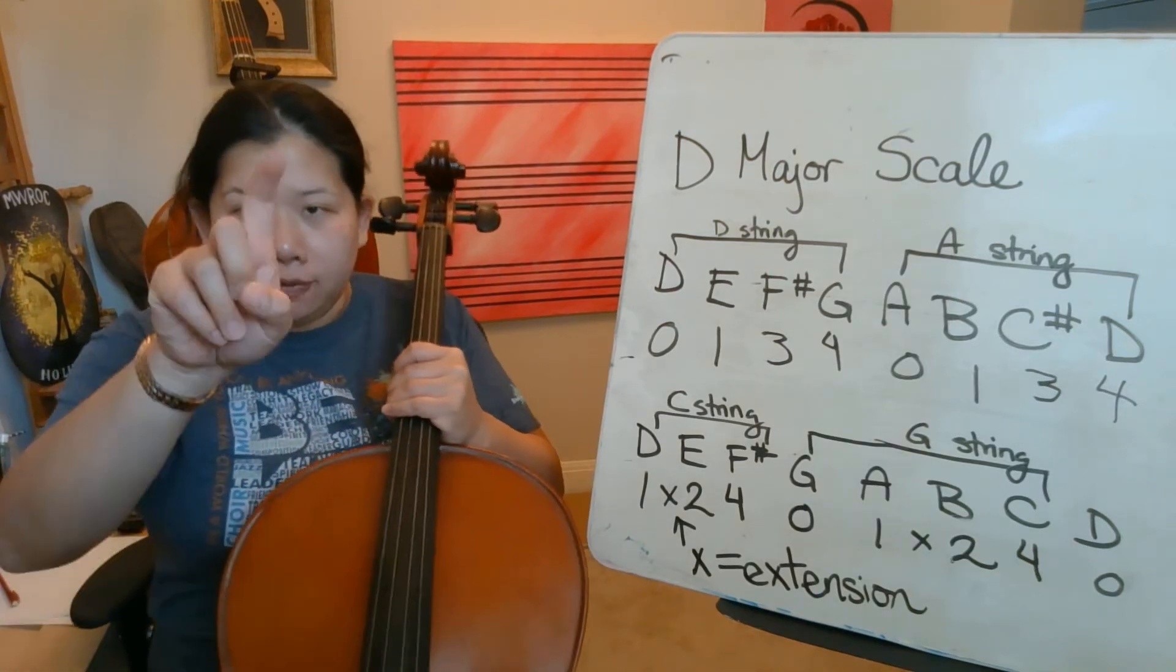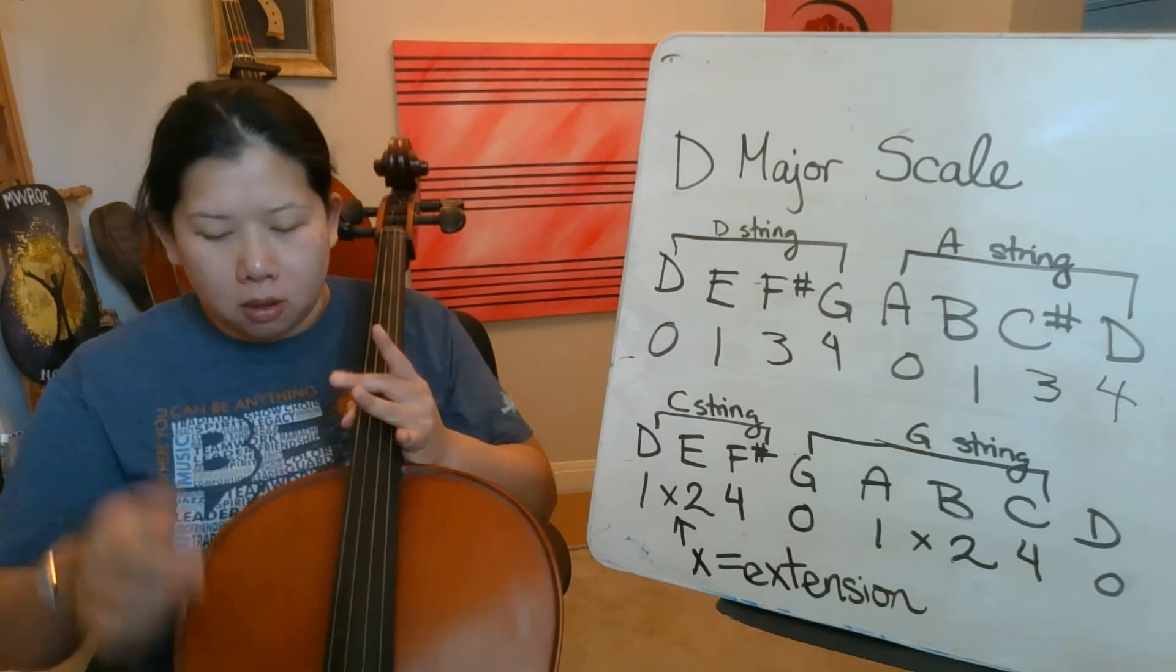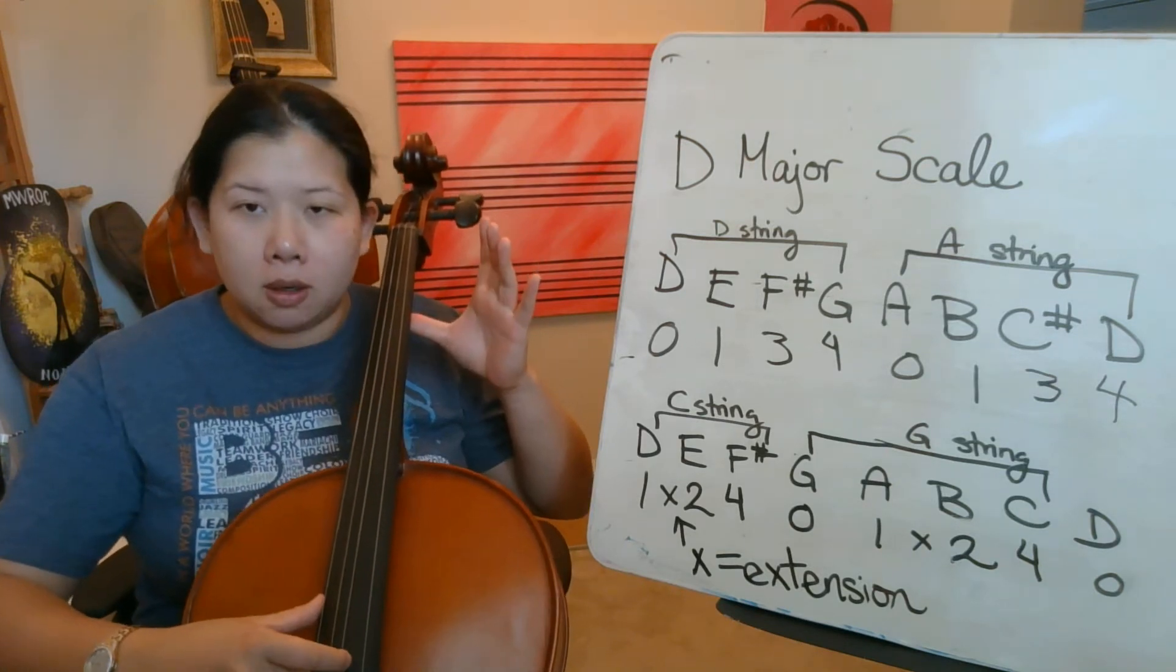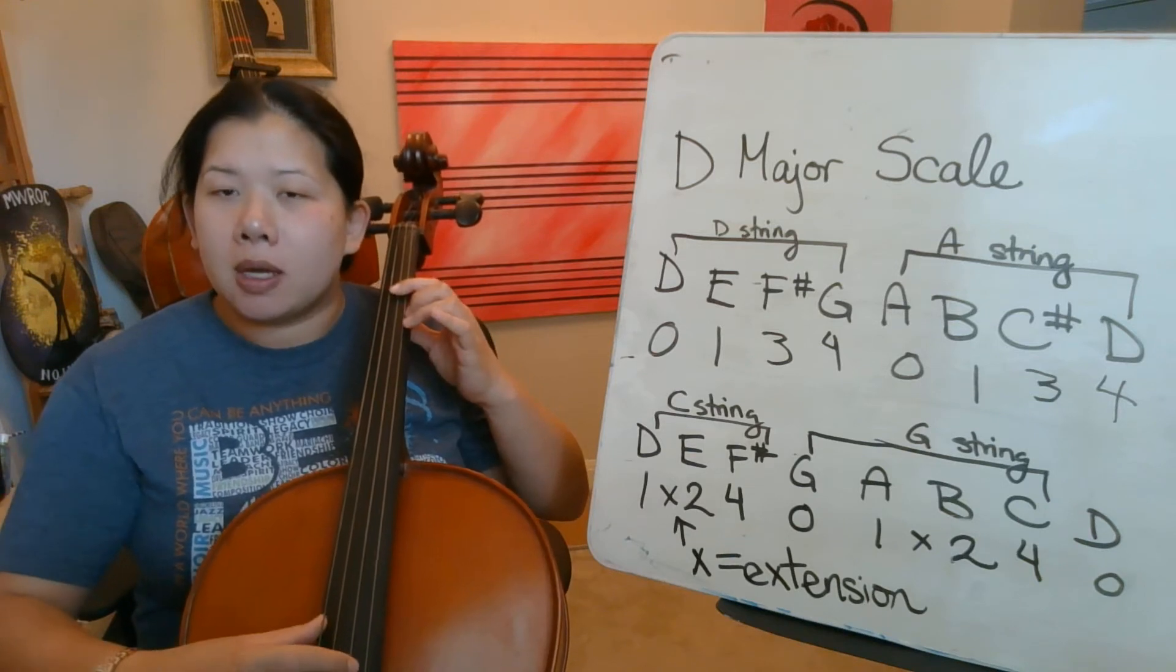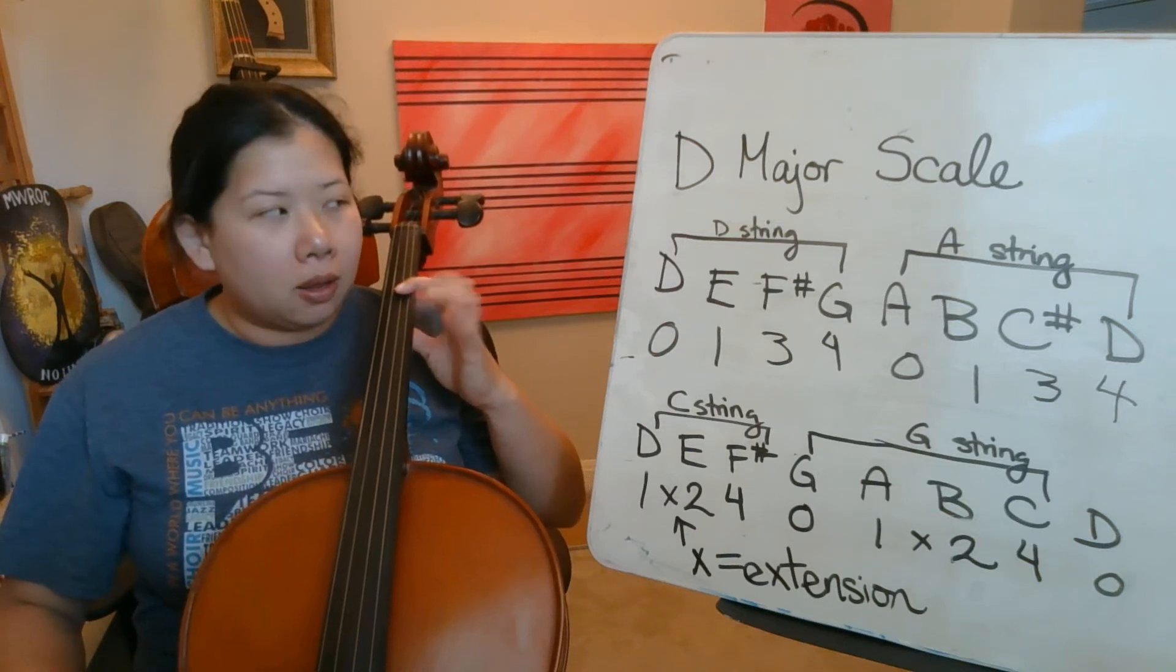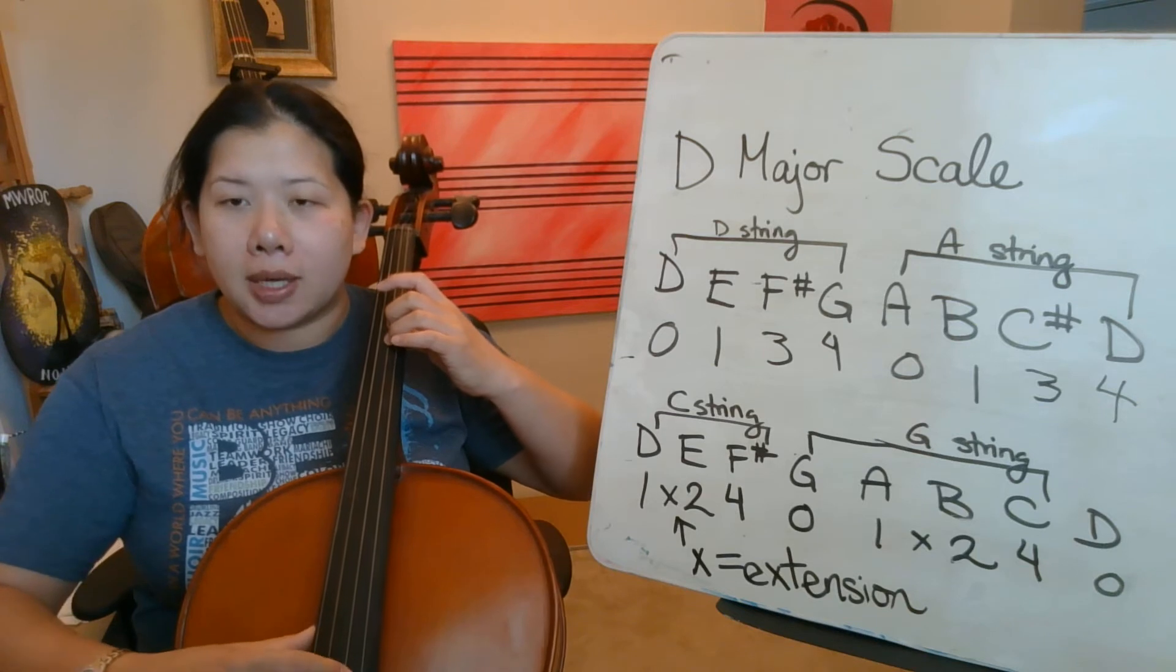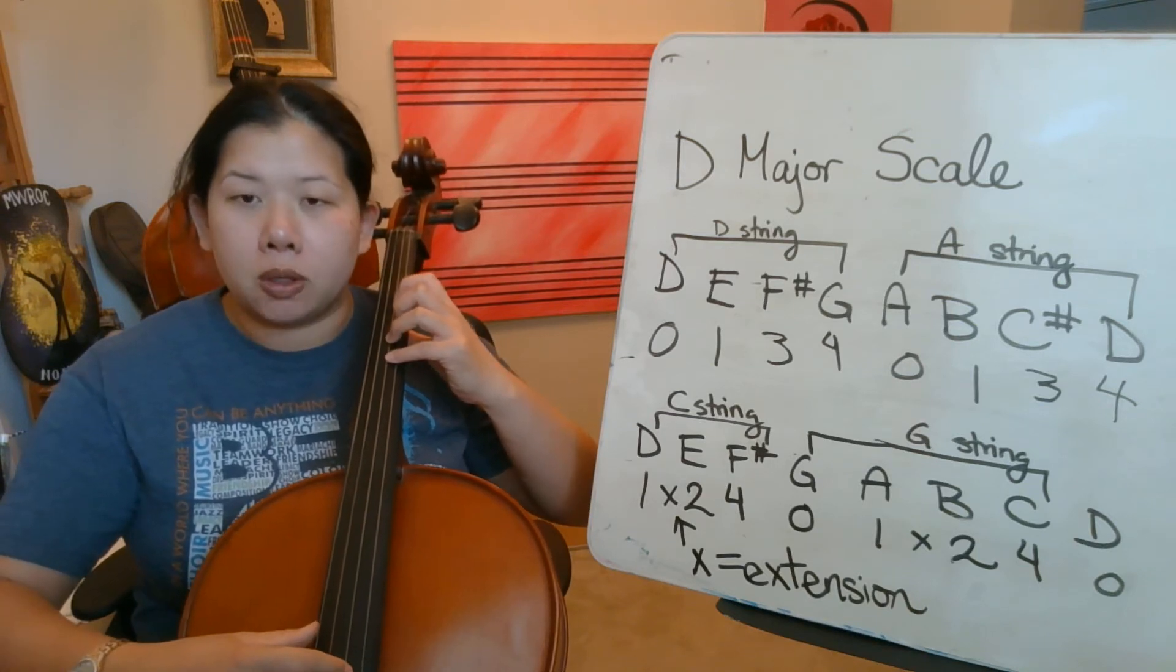Alright, so we're going to pluck first. I don't have any tapes, but I'm going to say the tapes for you guys too. So open D, second string, D. First finger, E on the yellow tape, E, yellow. Third finger, F sharp on the red tape, F sharp. Fourth finger, G on the blue.